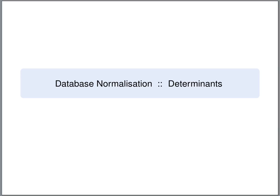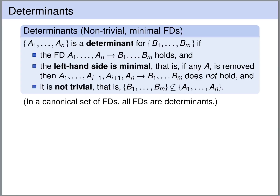A determinant is a minimal non-trivial functional dependency. We say that a set of attributes a1 up to an is a determinant for a set of attributes b1 up to bm if the following conditions hold. First, we must have a functional dependency where a1 up to an uniquely determines b1 up to bm. Moreover, this functional dependency should be minimal, in the sense that if we remove any attribute from the left-hand side, then the functional dependency is no longer valid.